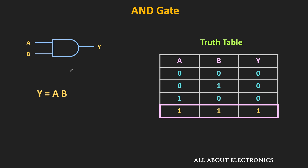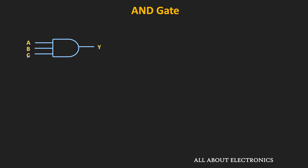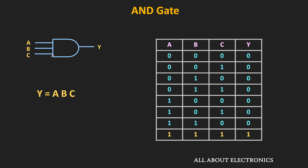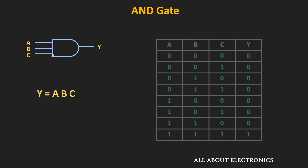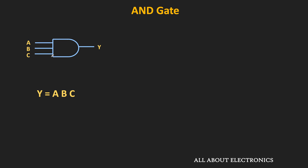Similarly, we can also have an AND gate with more than two inputs. Here is the symbol of the three-input AND gate, where A, B, and C are the inputs. The Boolean expression is Y = ABC, meaning whenever all three inputs are high, then and only then will the output be equal to high. Similarly, we can also have an n-input AND gate.